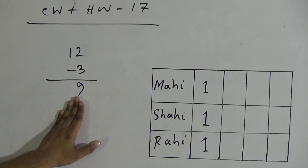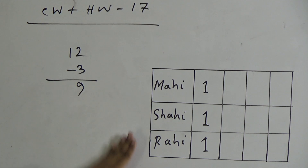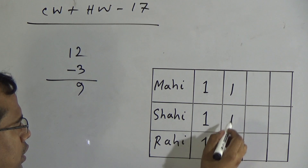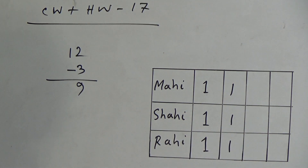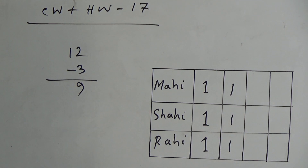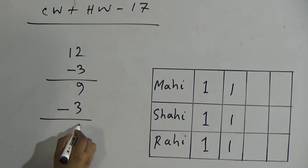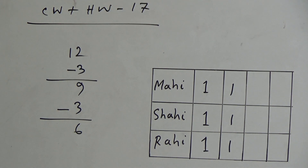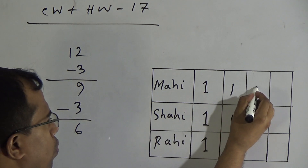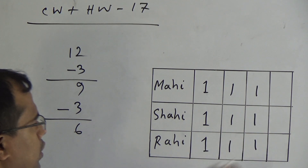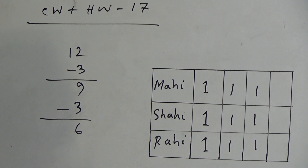Now, from these 9 chocolates, in the second stage, again I will give 1 chocolate to Mahi, another 1 chocolate to Shahi, and another 1 chocolate to Rahi. In the second stage also, I have given 3 chocolates among my students. So now I have 9 minus 3 equal to 6 chocolates. Again, I will give 1 chocolate to Mahi, 1 to Shahi, and another 1 to Rahi. Now I have 3 chocolates.